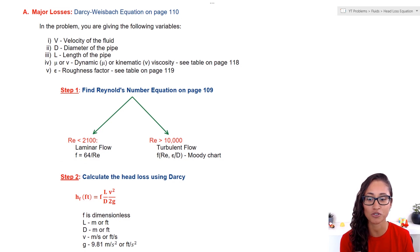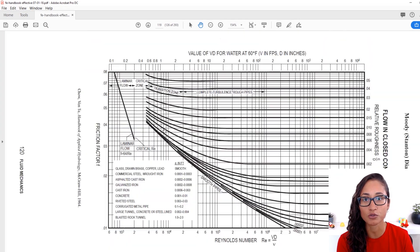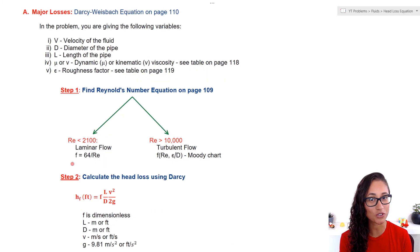You don't need to remember this equation. It is provided to you on the reference manual. If you go to page 119 on the Moody chart, it shows you that we have laminar flow and the friction factor is equal to 64 over RE. Once you calculate your friction factor, you can go to the head loss equation, just plug in all the numbers, and you can easily solve for your head loss.